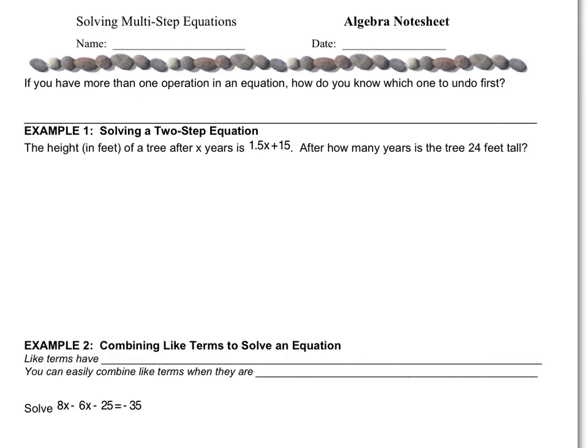Multi-step equations, just the way they sound, require multiple steps. It's not just a one move and you're done. So if you have more than one operation in an equation, how do you know which one to undo first? We talked in the last section about the word 'undo' — it refers to our inverse operations. We have to undo the operations we see to move numbers or variables to the other side to start isolating the variable.